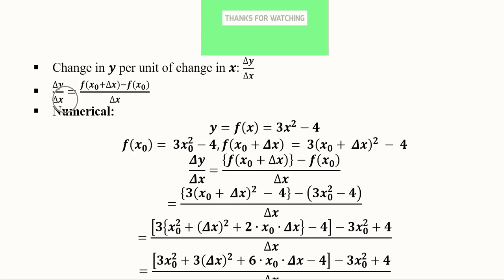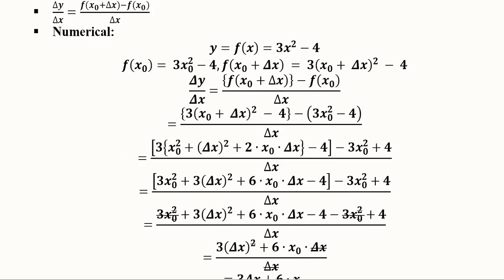We write delta y over delta x. In delta y, we subtract the original value of the function from the new post-change value. Value after change minus value before change gives us the difference — this is why it is called the difference quotient: we take the difference and then divide it.